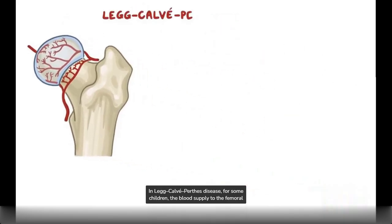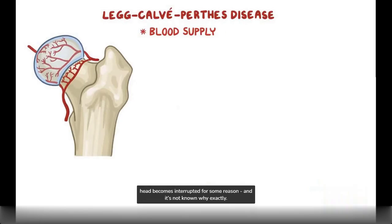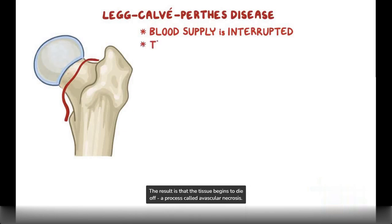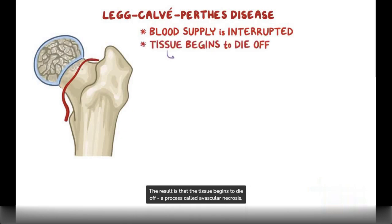In Legg-Calvet-Perthes disease, for some children, the blood supply to the femoral head becomes interrupted for some reason, and it's not known why exactly. The result is that the tissue begins to die off, a process called avascular necrosis.